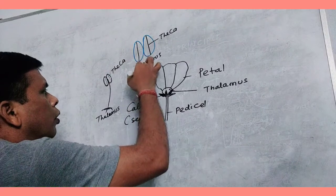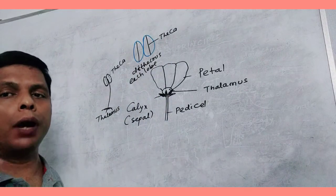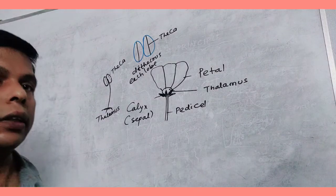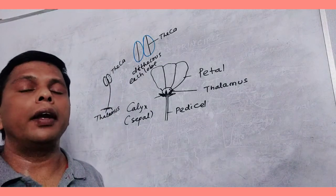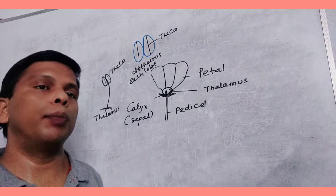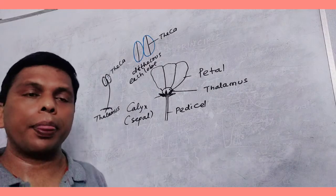Four chambers are found in anther. Inside each anther, pollen grain formation takes place by the process of microsporogenesis.